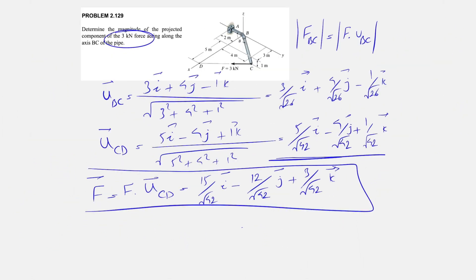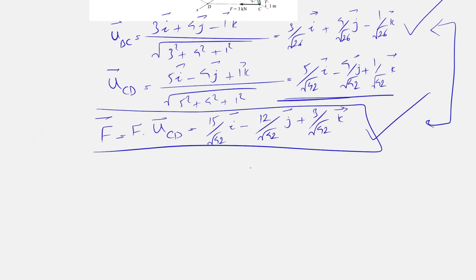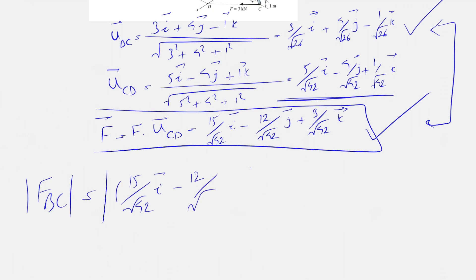Now, to find the projected component of this force, we need the dot product of F and the unit vector U_BC. Since the question asks for the magnitude, we find the dot product of F (which we found in vector form) and U_BC. So we have the dot product of F = (15/√42)i − (12/√42)j + (3/√42)k and the unit vector U_BC.